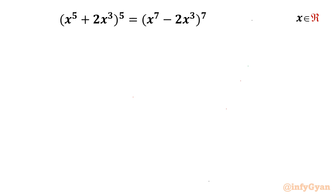Welcome back to Infigyan friends. In this video we are going to handle one very interesting question from algebraic equations. The equation is (x⁵ + 2x³)⁵ = (x⁷ - 2x³)⁷. We have to find out the real values of x. So let us get started.